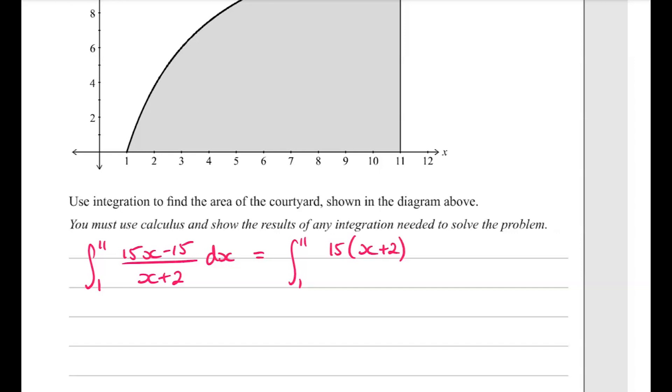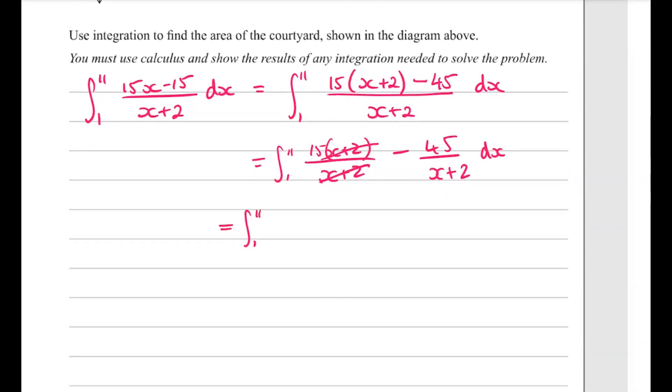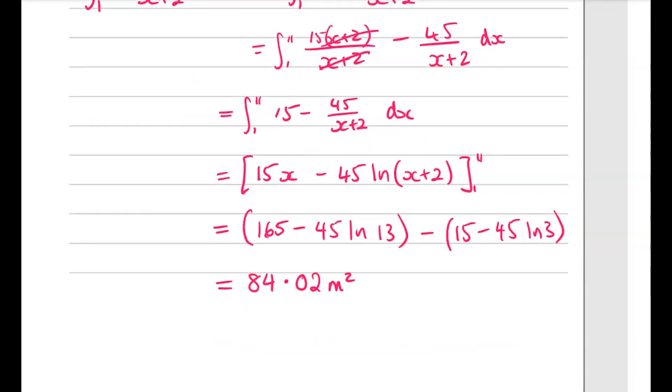This would give us 15x plus 30, but we actually want it to be 15x minus 15. So if we did that, that would come out to a plus 30. So we need to subtract 45 to make it equivalent. And that's over x plus 2. So that we can now separate into 15x plus 2 over x plus 2 minus 45 over x plus 2. This x plus 2 cancels with this one. So now we're just integrating 1 to 11 of 15 minus 45 over x plus 2 dx. And working that through gives us 84.02 meters squared.